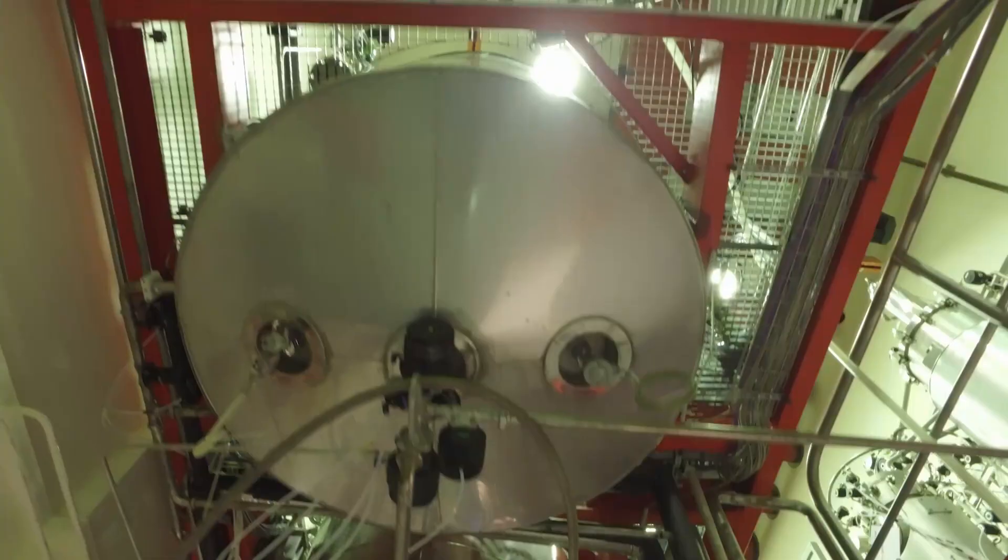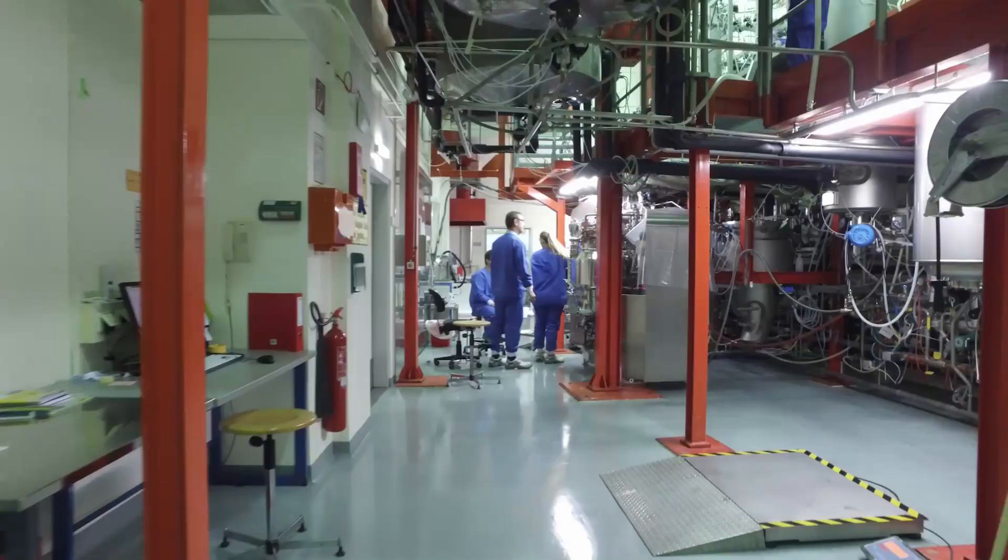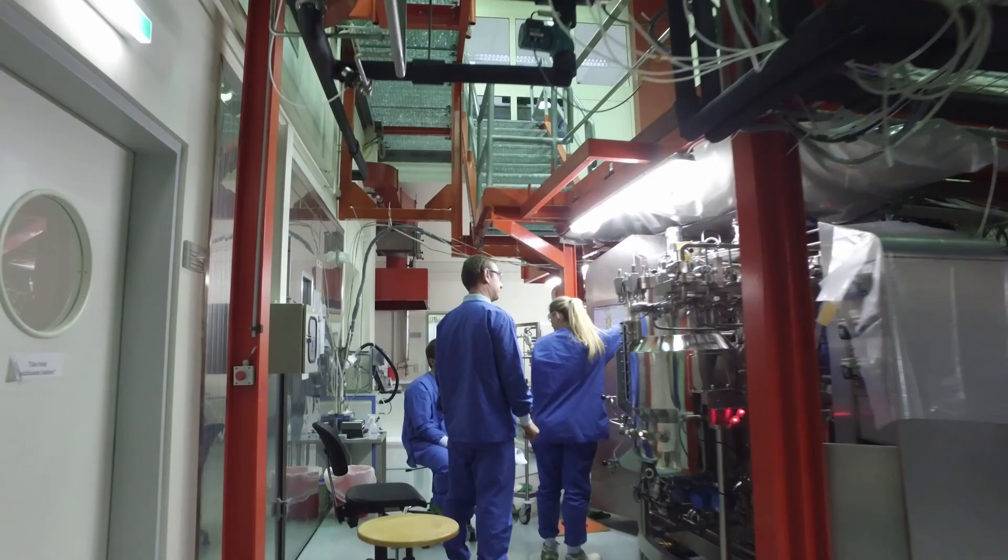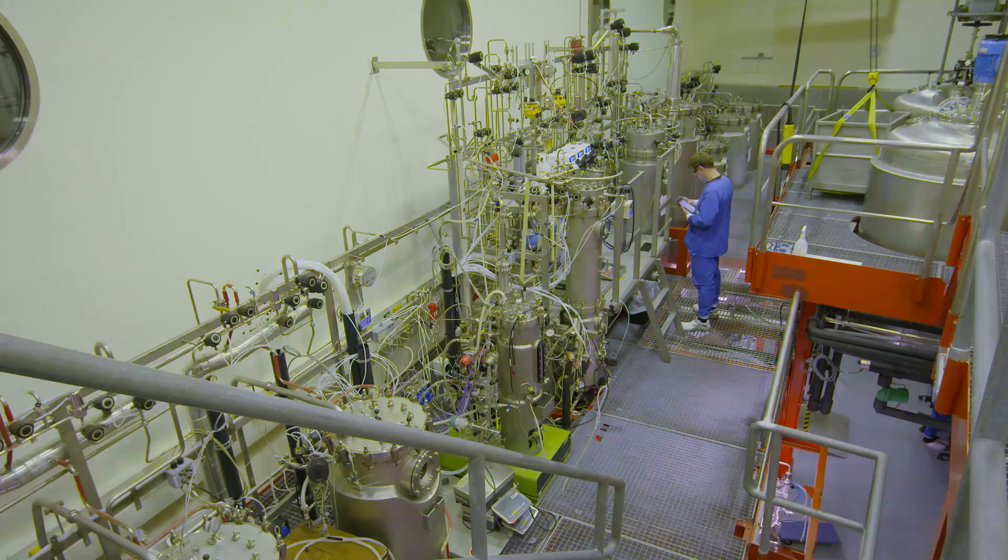The plant is equipped with state-of-the-art instrumentation for up- and downstream processing at a scale of 50 to 300 litres, including bioreactors and reaction vessels, centrifuges, high-pressure homogenizers, and filtration equipment.